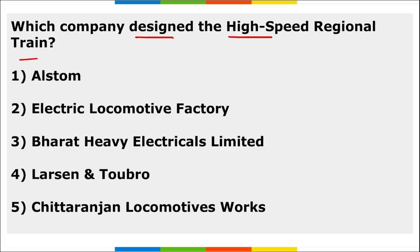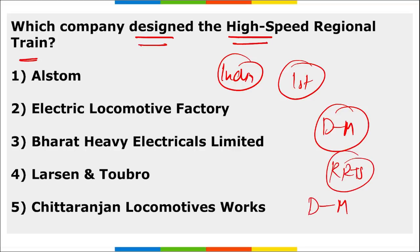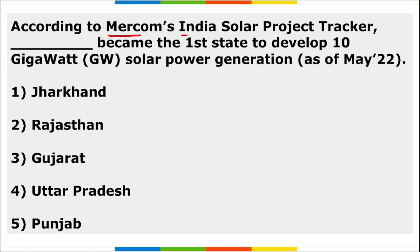India received its first semi high-speed regional train for the Delhi-Meerut Regional Rapid Transit System (RRTS). The company that designed this high-speed regional train is Alstom. Remember: Alstom designed the RRTS train.